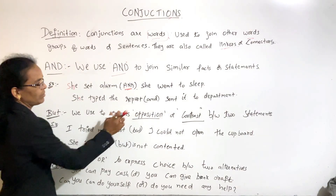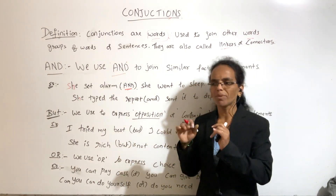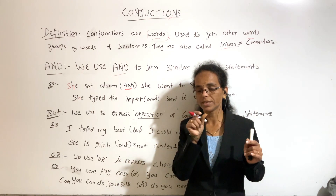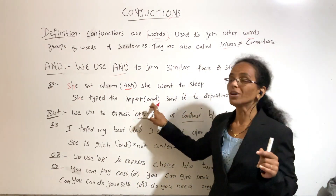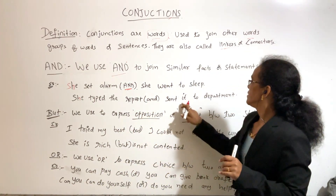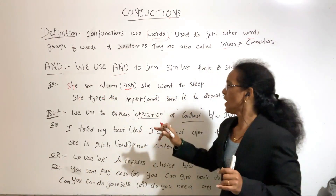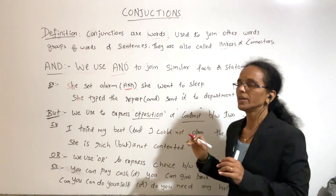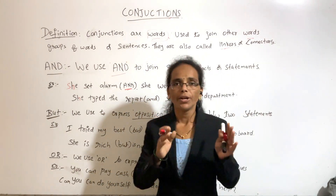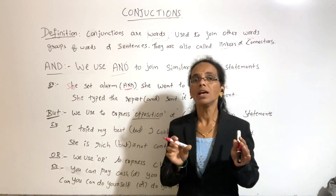Another example: She typed the report AND sent it to the department. She typed the report — that is one action. She sent it to the department — that is another. There are two positive statements, two similar facts, so we use the conjunction AND.